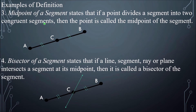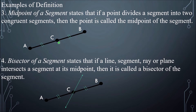The midpoint of a segment is defined as follows: if a point divides a segment into two congruent segments, then that point is called the midpoint. In the figure shown, point C divides segment AB into two congruent segments AC and BC, so point C is the midpoint. Take note: a midpoint is a point.